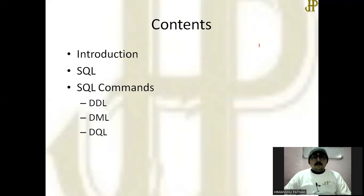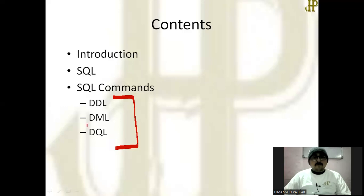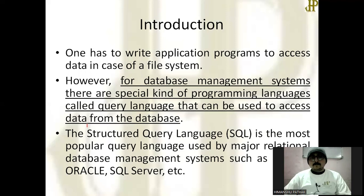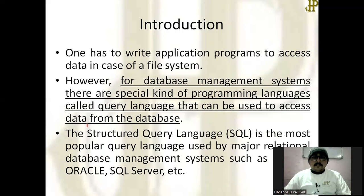We will learn about three basic types of commands: DDL, DML, and DQL. Other than these, there are more types like DCL and TCL, but in your course only three of them need to be covered. Now, as we know that in a file system, if you want to access data from a file, you need to write a program — for example, in C language, you have to write a program to fetch the data from the file.